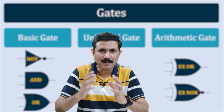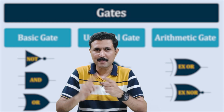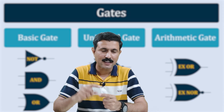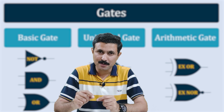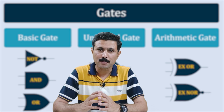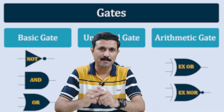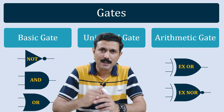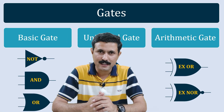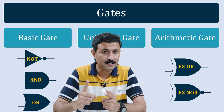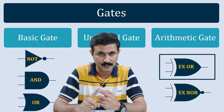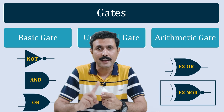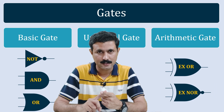In the previous video we explored basic gates and universal gates. In this video we are going to explore the arithmetic gates. There are two types of arithmetic gates: first is the XOR gate and the second one is the XNOR gate.